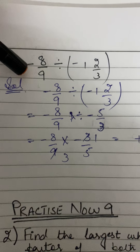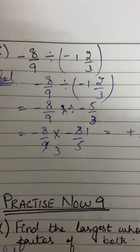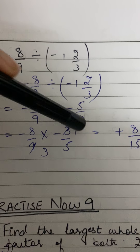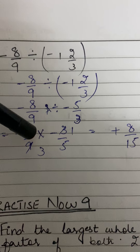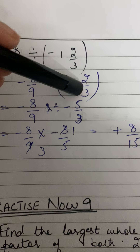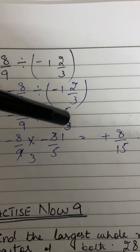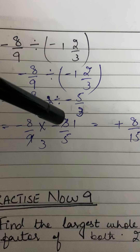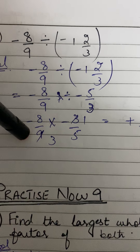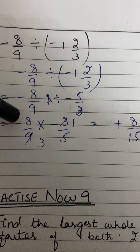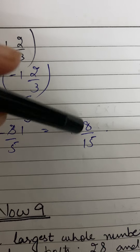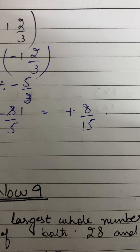Part f: minus 8 over 9 divided by minus 1 whole 2 over 3. Convert the mixed number: 3 ones are 3, plus 2 is 5 — so minus 5 over 3. Change division to multiplication using the reciprocal: minus 5 over 3 becomes minus 3 over 5. So we have minus 8 over 9 times minus 3 over 5. Cancel 3 and 9: we get minus 8 times minus 1 over 3 times 5. Minus times minus is plus, so the answer is 8 over 15.